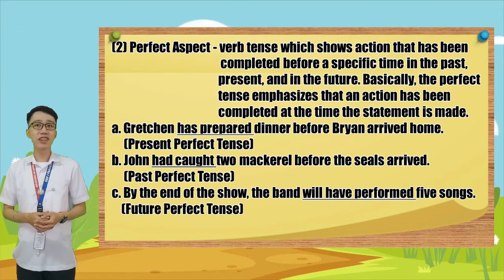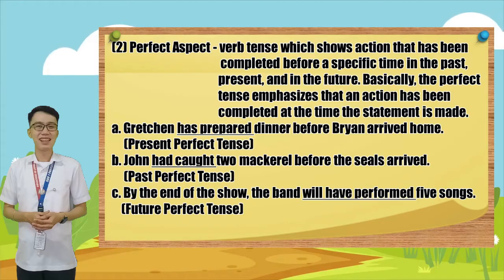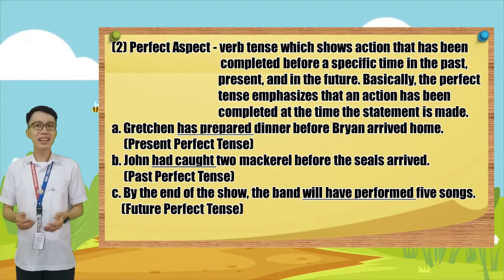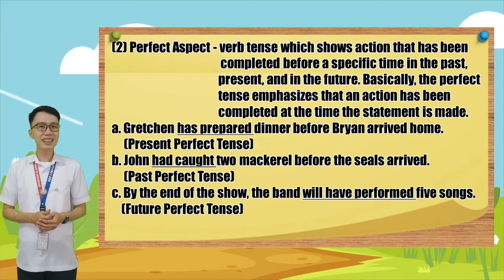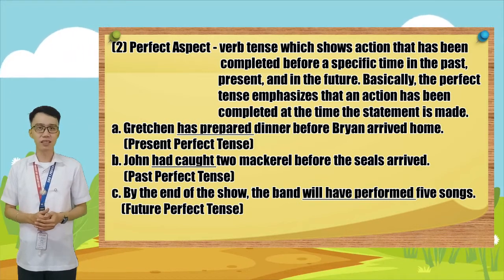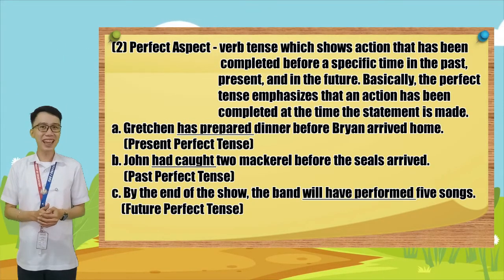What is the tense of the underlined verb? Good job, kids! It is in present perfect tense. Letter B: 'John had caught two mackerel before the seals arrived.' What is the tense of the underlined verb? Good job, kids! In past perfect tense. Letter C: 'By the end of the show, the band will have performed five songs.' What is the tense of the underlined verb? Great! The answer is future perfect tense.